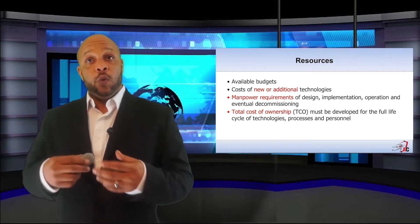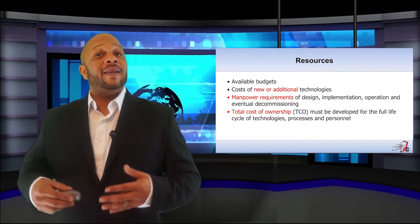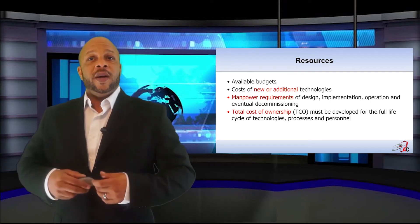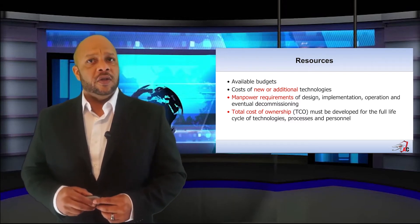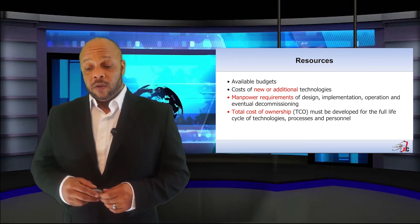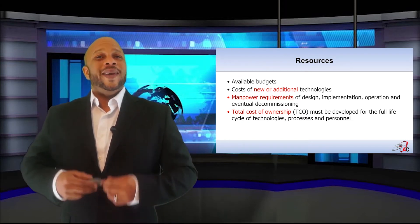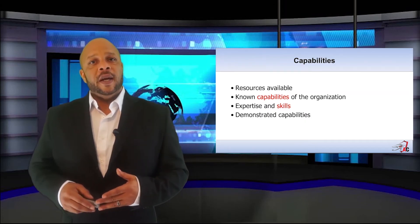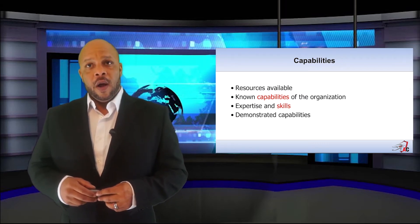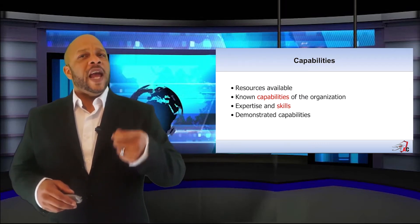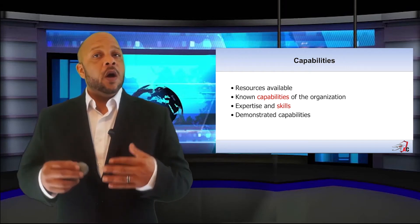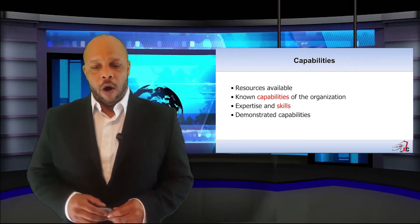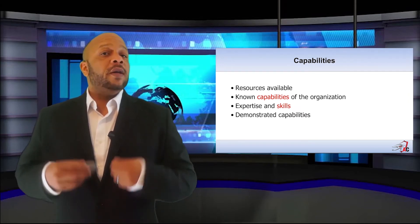Through that cost-benefit analysis, we are going to find our resource advantages and constraints. What is our current and future available budget? What is the cost of new or additional technologies we need to employ? Do we have manpower requirements we'll need to increase, and what is the total cost of ownership for the full life cycle of this strategy? As we begin to answer those questions, especially about manpower, we'll start to identify capability gaps. Identifying known capabilities will help identify possible outsource requirements or new hire requirements to bring in that expertise.